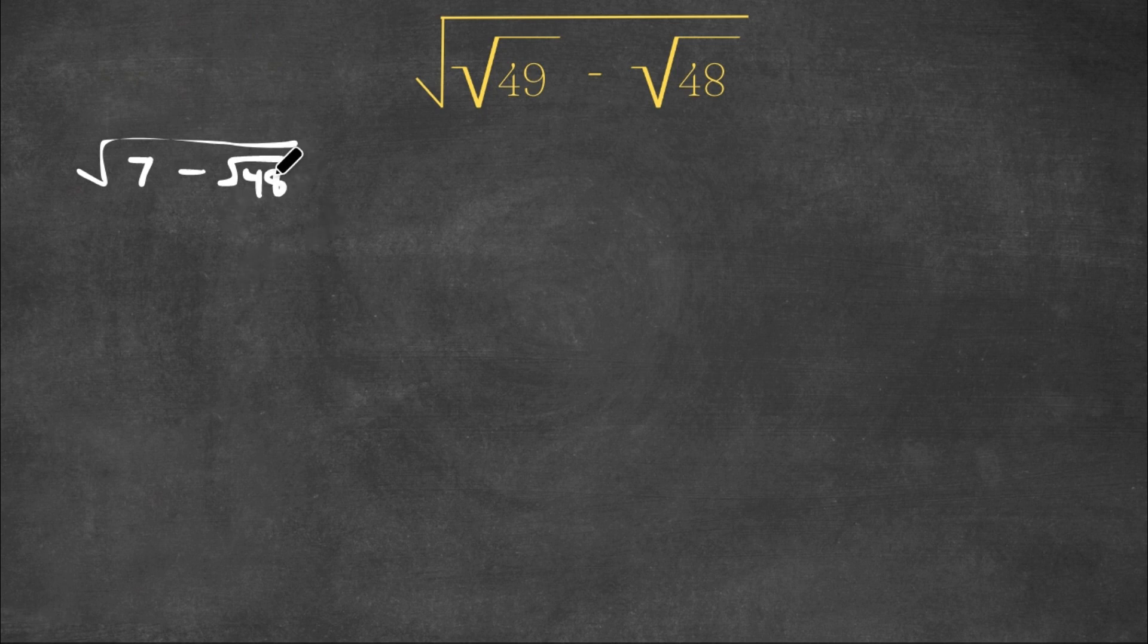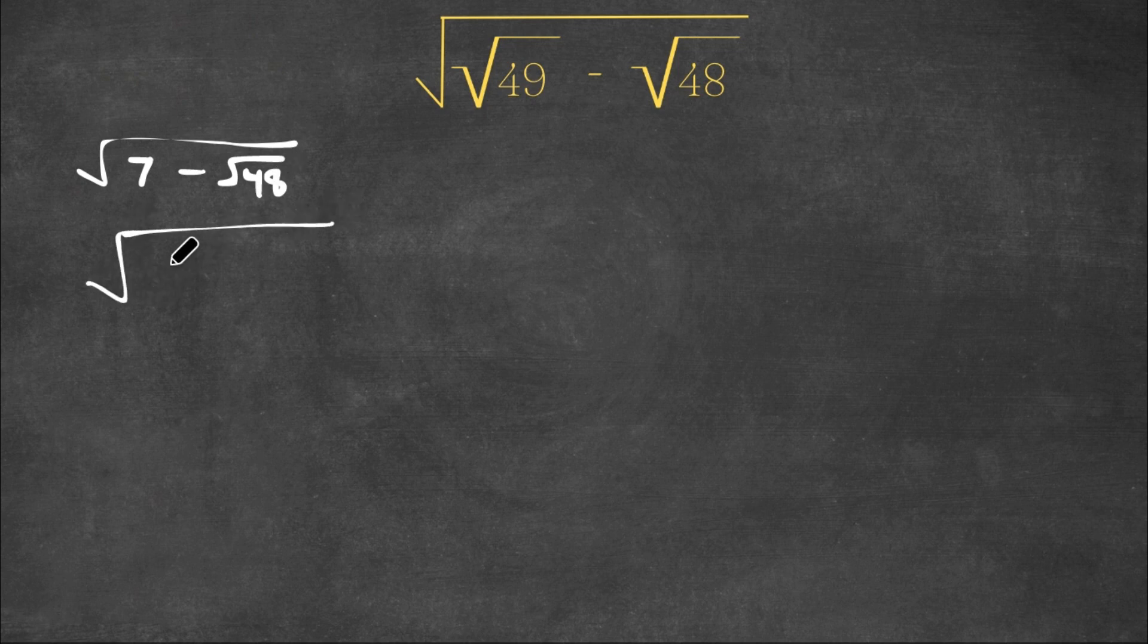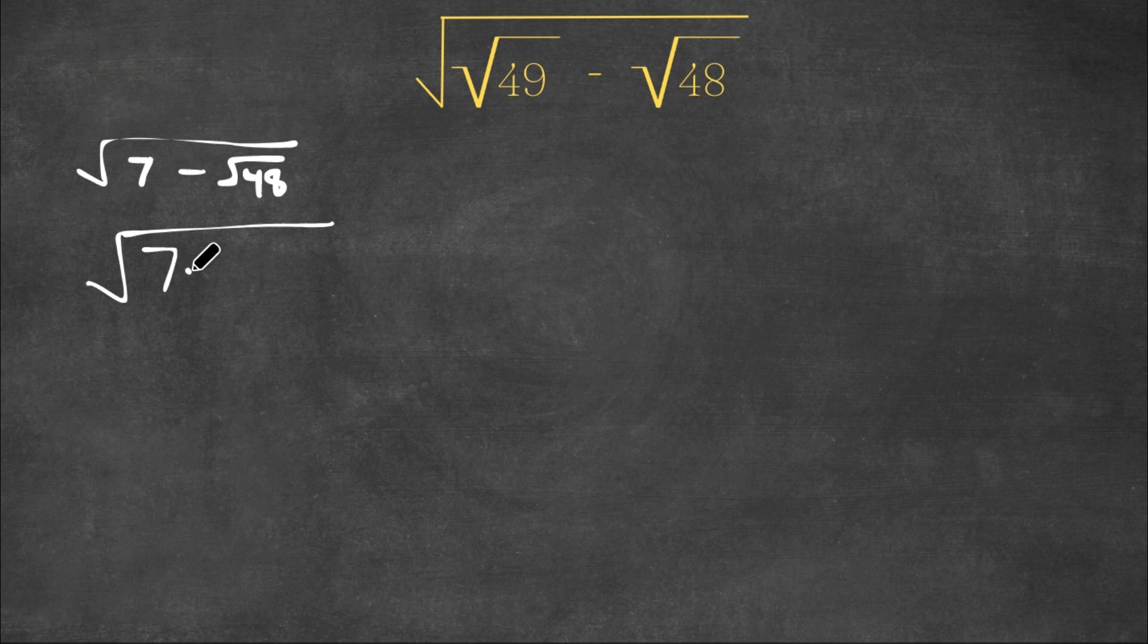And 48 is equal to 16 times 3, right? So now we have the square root of 7 minus the square root of 16 times 3.